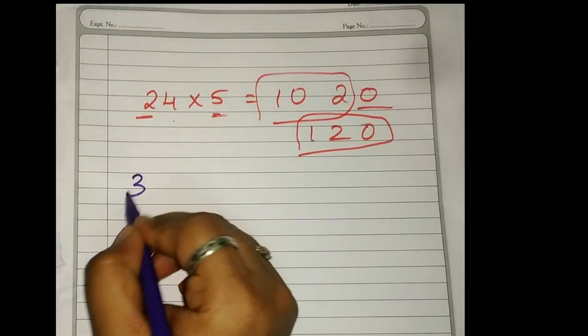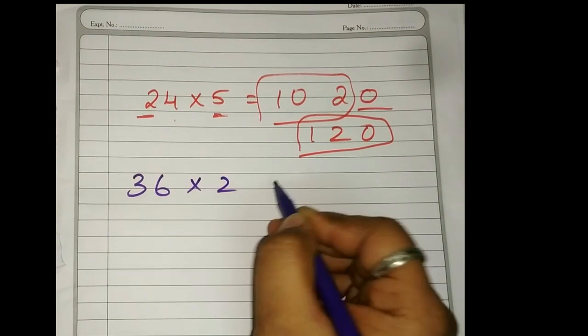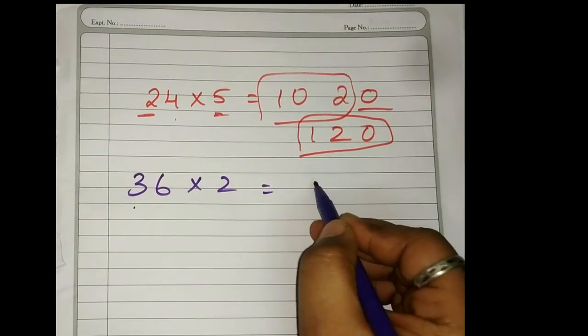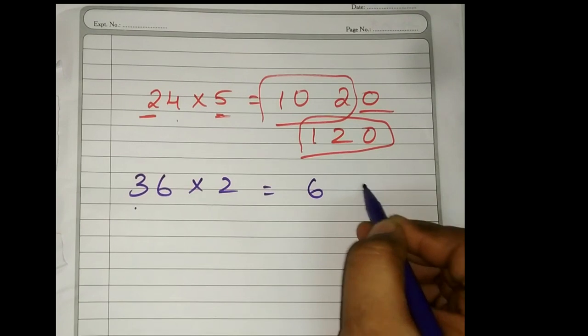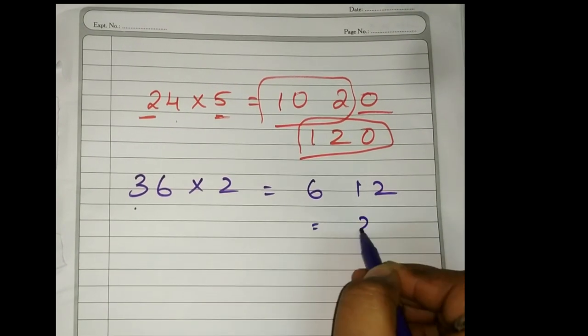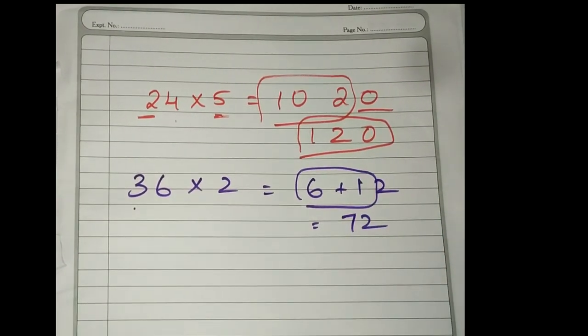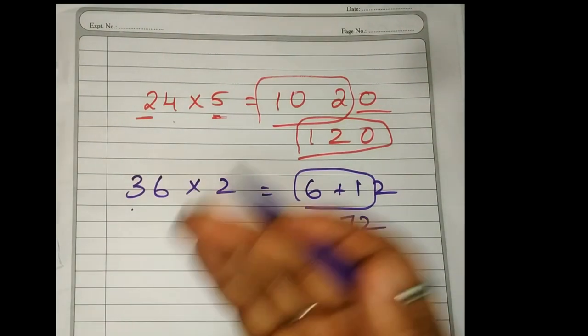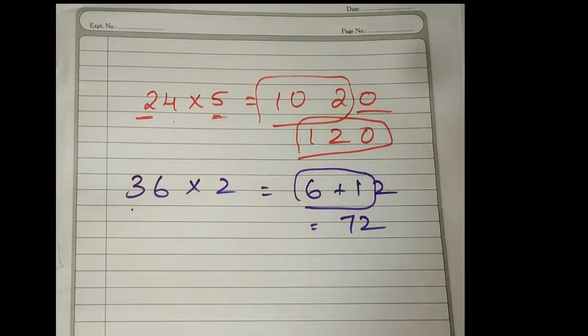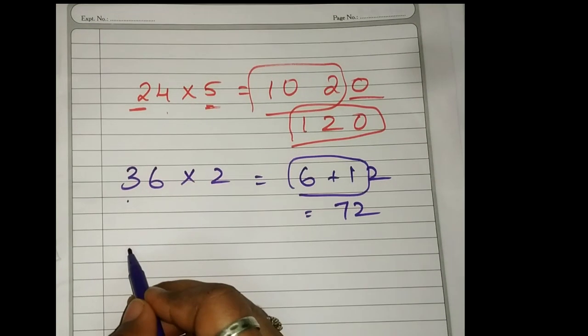You can write it on your own. If I have given 36 times 2, what it should strike? 6 threes are? 6. 6 twos are 12. So 2 should be in the ones place. 6 plus 1, it is 72. Am I clear? So this is the way you should start practicing the mental calculation.